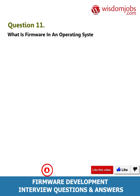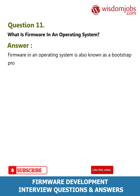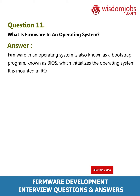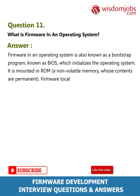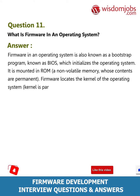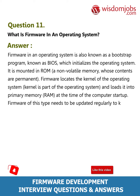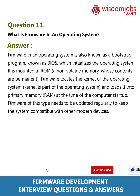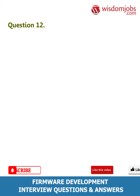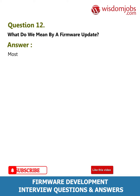Question 11: What is firmware in an operating system? Firmware in an operating system is also known as a bootstrap program, known as BIOS, which initializes the operating system. It is mounted in ROM, a non-volatile memory whose contents are permanent. Firmware locates the kernel of the operating system and loads it into primary memory (RAM) at the time of computer startup. This type of firmware needs to be updated regularly to keep the system compatible with modern devices.